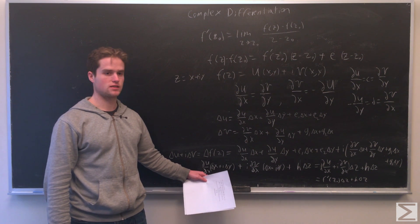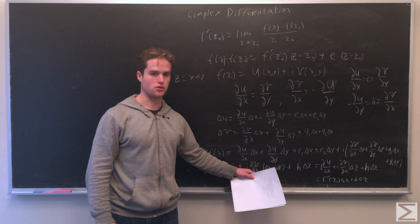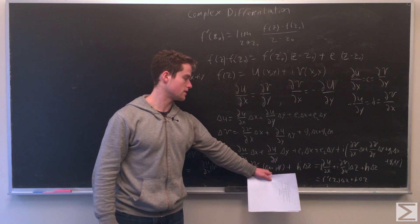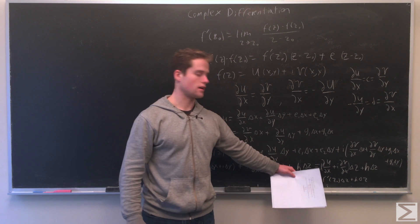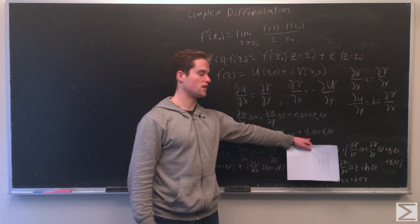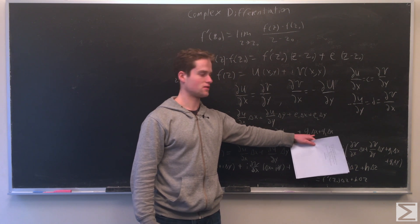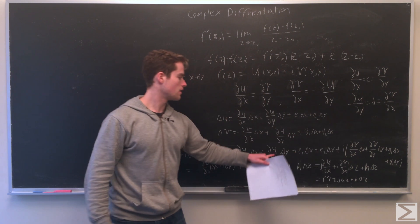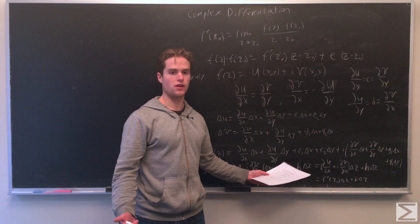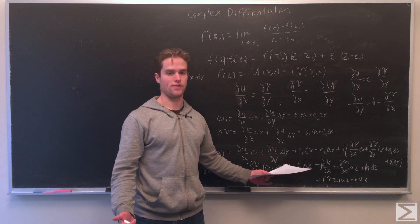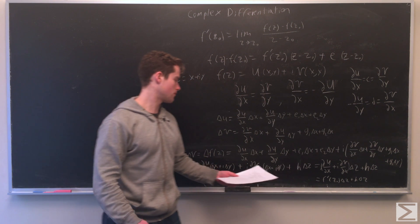We get: partial u partial x times delta z, plus i times partial v partial x times delta z, plus a combination of all the error terms that go to zero as x and y go to zero. Factoring out delta z, we get another constant that goes to zero as delta z goes to zero.